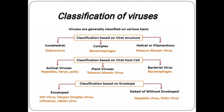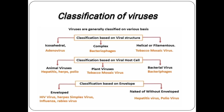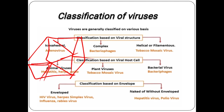An example of icosahedral viruses is adenovirus. Complex viruses have a tadpole-like structure with head and tail-like structures. The example of this complex virus is bacteriophage.